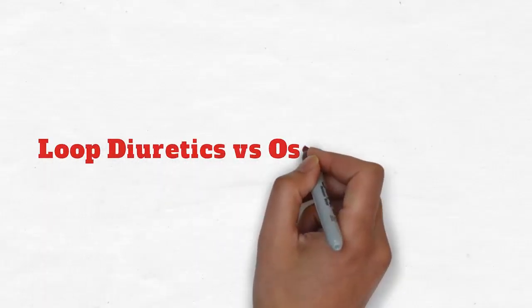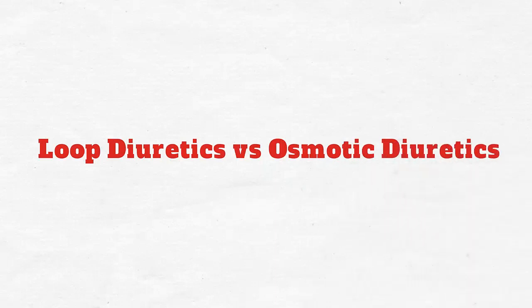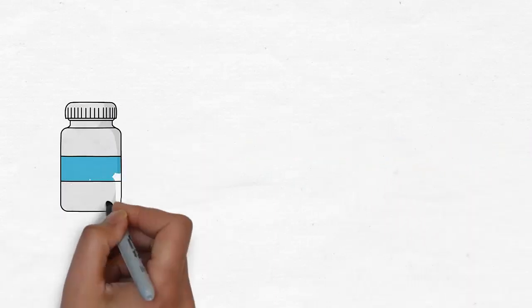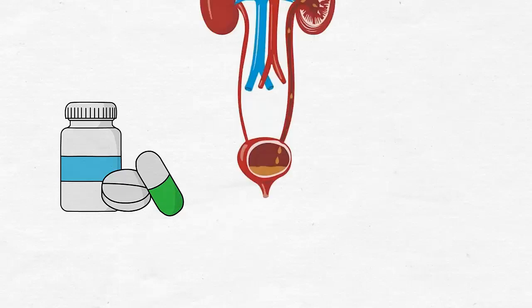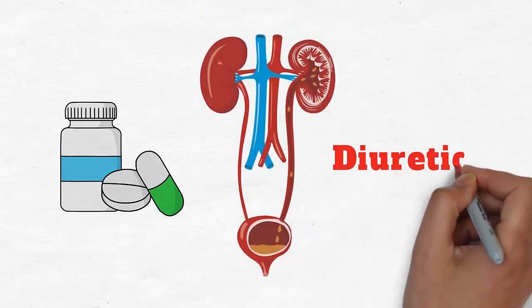Loop diuretics versus osmotic diuretics. Medications that help the body release water through increased urination are called diuretics.